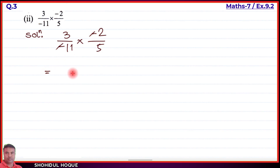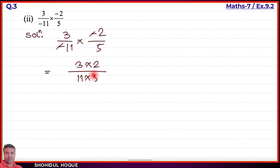If numerator and denominator cannot be simplified further, we multiply top by top and bottom by bottom. So upro (numerator): 3 times 2 gives 6; tolot (denominator): 11 times 5 gives 55. The answer is 6 by 55.